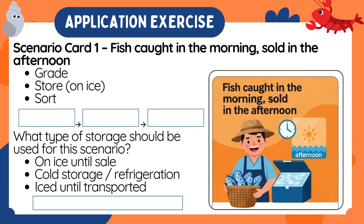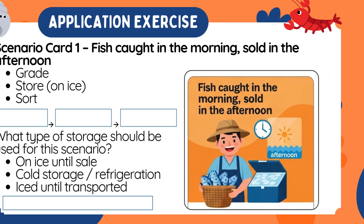Scenario card 1: Fish caught in the morning, sold in the afternoon. Steps: grade, store on ice, sort. What type of storage should be used? Choices: On ice until sale, cold storage, refrigeration, or iced until transported.